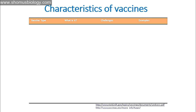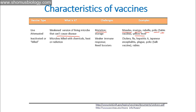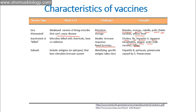To summarize the drawbacks of each type: Live attenuated vaccines use a weakened living microbe that can't normally cause disease, but there's a chance of mutation and reversal. Examples include measles, mumps, rubella, polio (Sabin vaccine), and yellow fever. Inactivated or killed vaccines use microbes killed with chemicals, heat, or radiation — they are safest but produce a weaker immune response and require booster doses. Examples include cholera, flu, hepatitis A, Japanese encephalitis, plague, polio, and rabies vaccines.